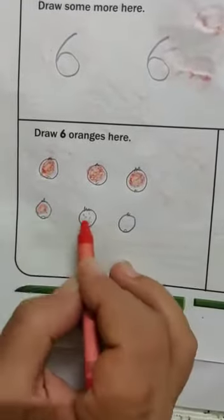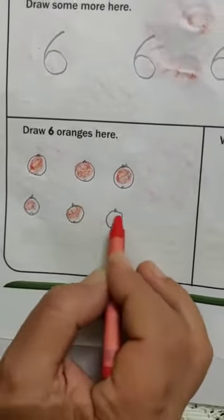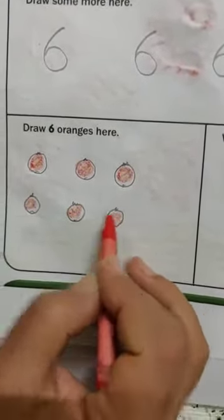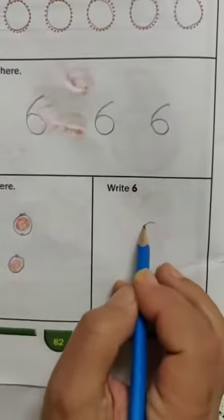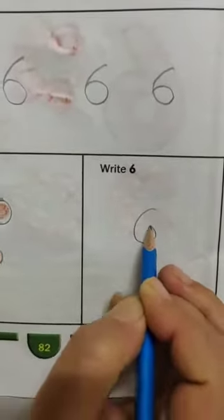How many oranges are there? Now we will count all these oranges. 1, 2, 3, 4, 5, 6. And you have to write 6 here. And here we will count all these oranges.